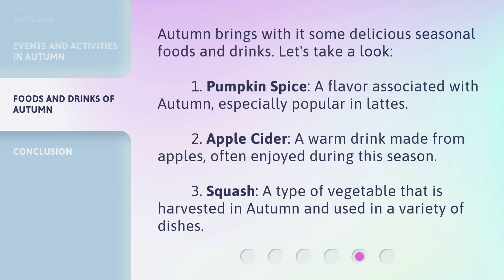Autumn brings with it some delicious seasonal foods and drinks. Let's take a look. 1. Pumpkin spice: A flavor associated with autumn, especially popular in lattes. 2. Apple cider: A warm drink made from apples, often enjoyed during this season. 3. Squash: A type of vegetable that is harvested in autumn and used in a variety of dishes.